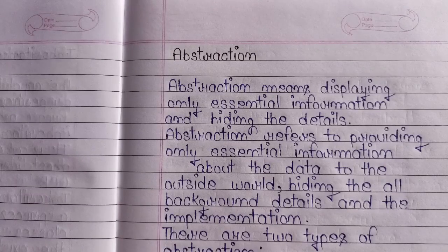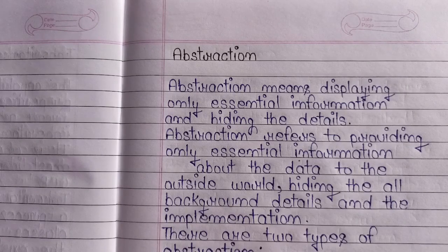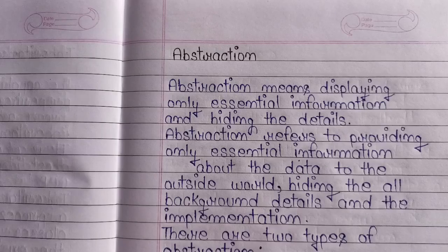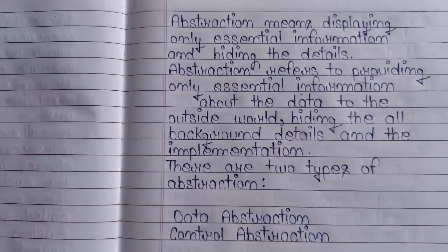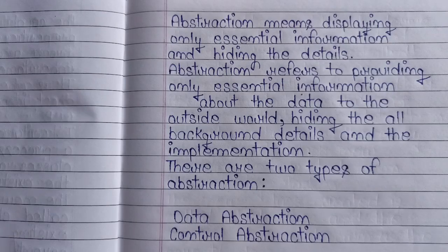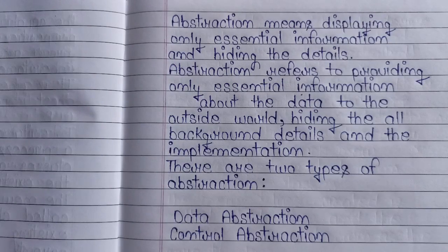What is abstraction? Abstraction means displaying only essential information and hiding the details. Abstraction refers to providing only essential information about the data to the outside world, hiding all background details and the implementation. Abstraction is a process in which we focus only on essential features, and hide unnecessary things — meaning implementation details are hidden. It is of two types: first, data abstraction; second, control abstraction.